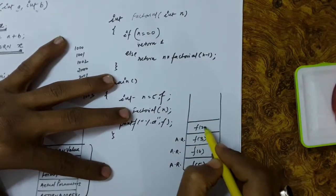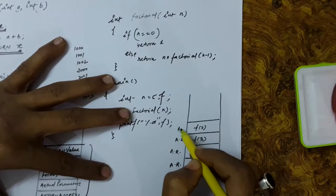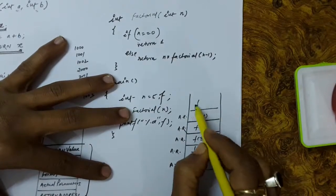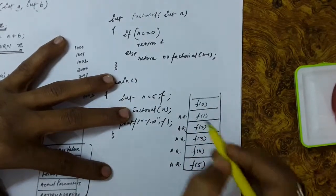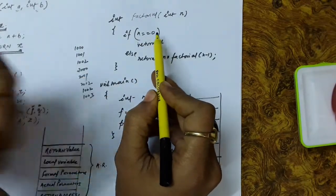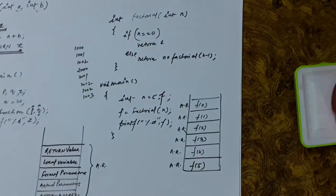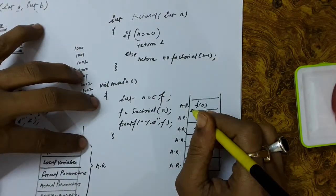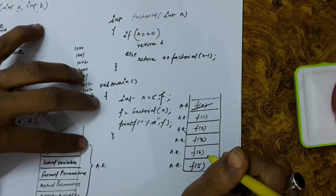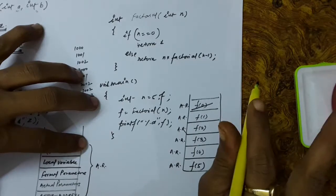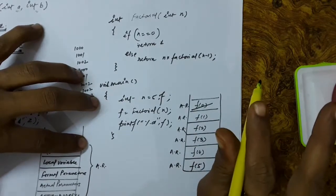Inside factorial 3, we will store factorial 2. Inside factorial 2, we will call factorial 1. Inside factorial 1, we will call factorial 0. Now we know that this is the base condition. The value of n is 0, and now we can return value 1 directly. Since we are returning the value directly, the activation record for factorial 0 will now be popped.